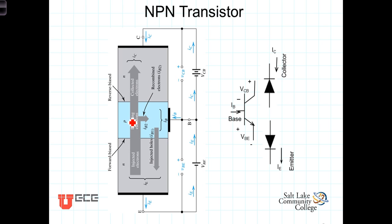Once again in the NPN transistor, electrons are the majority carrier and flow from the emitter to the collector. As we analyze this device, we're going to be explicit when we talk about charge carriers and current. Remember that electrons flow from a lower voltage to a higher voltage, but conventional current flows from the higher voltage to the lower voltage.